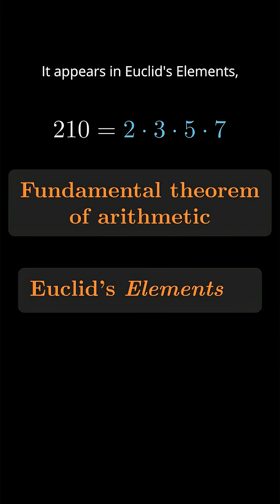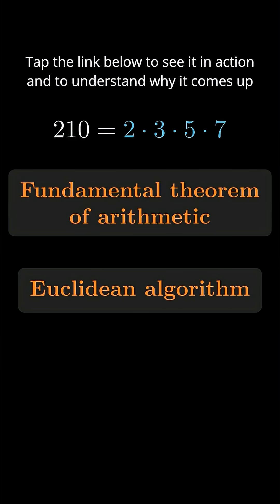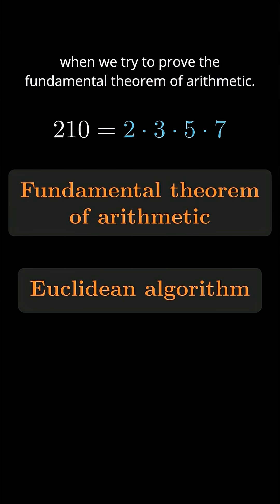It appears in Euclid's elements, and today we call it the Euclidean algorithm. Tap the link below to see it in action and to understand why it comes up when we try to prove the Fundamental Theorem of Arithmetic.